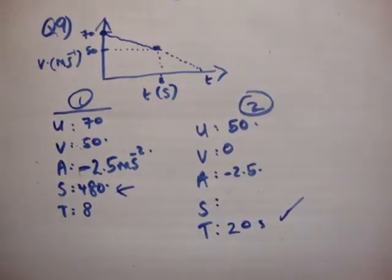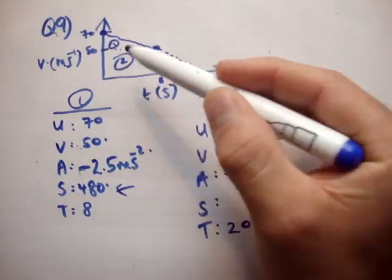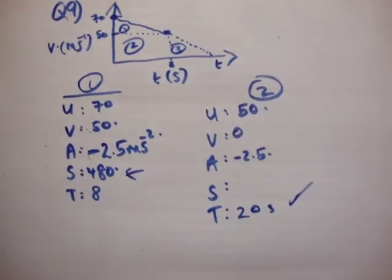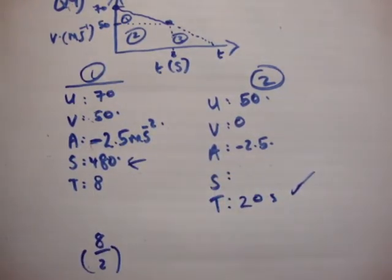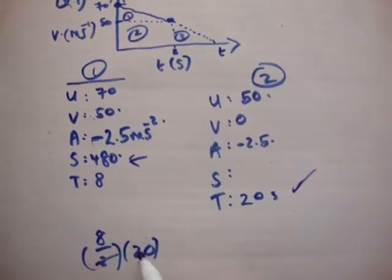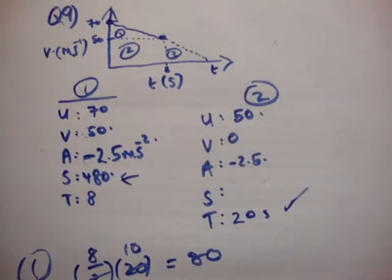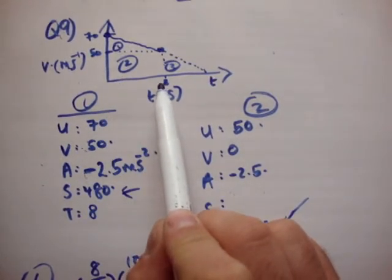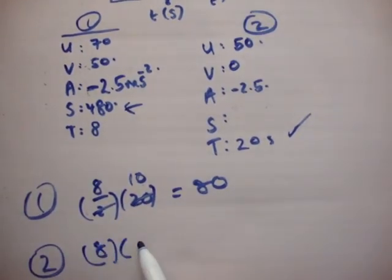Now, just to confirm that you can do things by distance, sorry, by area underneath the curve as well, let's just confirm this. So we have three shapes here. A triangle, a rectangle and another triangle. So, the first triangle, number 1, is half the base by the perpendicular height. The base is 8 seconds. So that's 8 over 2 times the height, which is between 50 and 70, which is 20. So that's 10 times 20 equals 80. That's for number 1. Number 2, it's the base by the height. So it's 8 times 50. So number 2 is 8 times 50 is equal to 400.